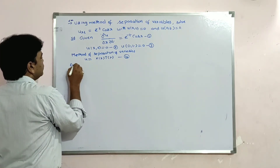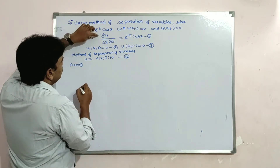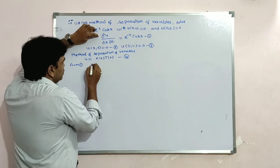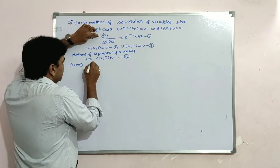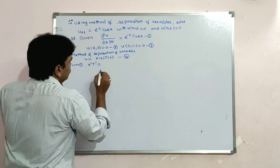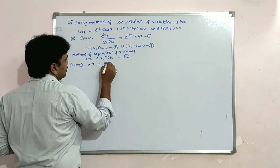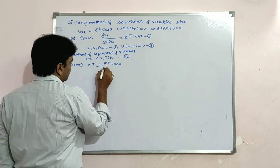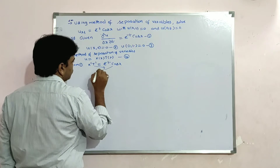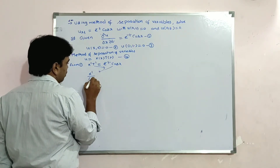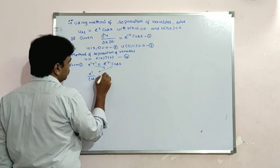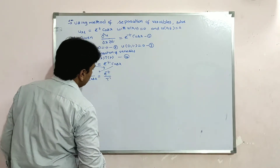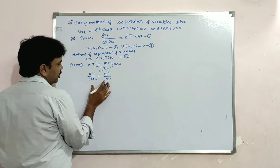From equation 1, ∂²u/∂x∂t — since u = X(x)·T(t) — we get X'·T' = e^(-t)·cos(x). Cross-multiplying T' and cos(x), we get X'/cos(x) on the left side and e^(-t)/T' on the right side.